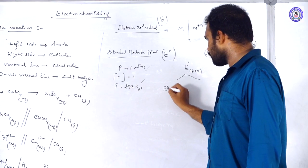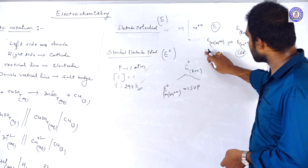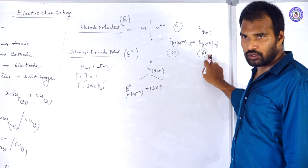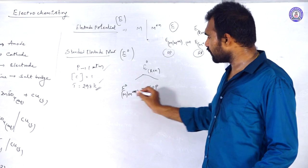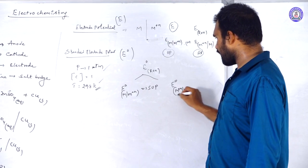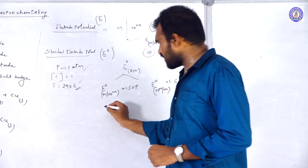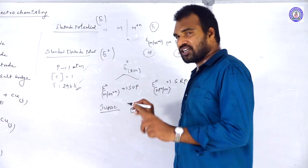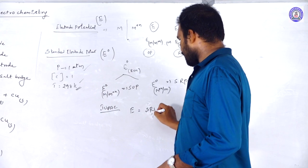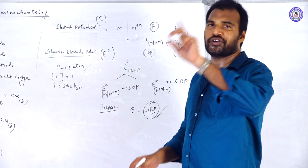E⁰(M | M⁺) is the standard oxidation potential (SOP), and E⁰(M⁺ | M) is the standard reduction potential (SRP). As per IUPAC notation, when electrode potentials are mentioned, they always consider SRP values as electrode potentials — not oxidation potential.